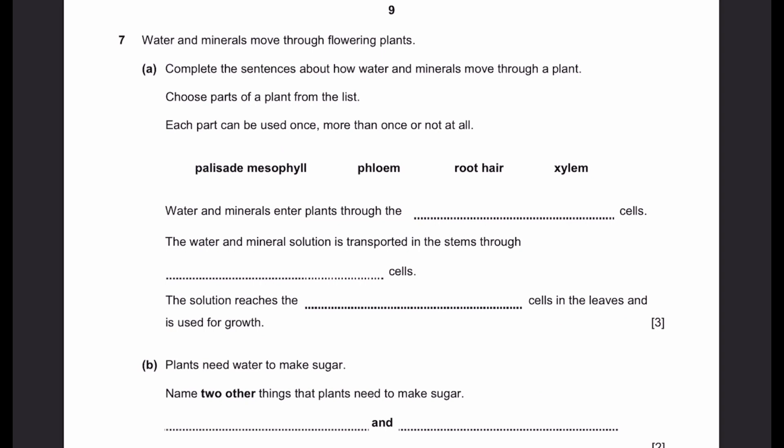Question 7. Water and minerals move through flowering plants. Part A. Complete the sentences about how water and minerals move through a plant. Choose parts of a plant from the list. Each part can be used once, more than once, or not at all.